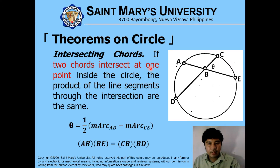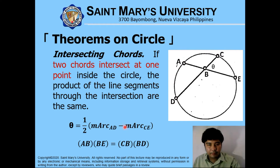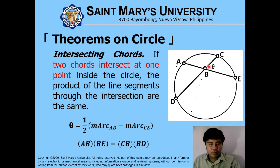For intersecting chords — if two chords intersect at one point inside the circle, the product of the line segments through the intersection are the same. The angle is equivalent to one half the measurement of arc AD less the measurement of arc CE. To find the length of one of the line segments — BD, AB, CB, or BE — apply the relationship: AB multiplied by BE is equivalent to CD multiplied by BD.